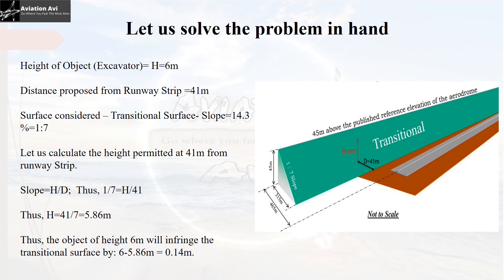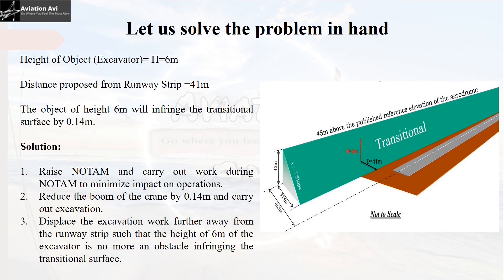The proposed height of the excavator is 6 meters, but the height permitted at 41 meters is only 5.86 meters. Therefore, the excavator will infringe on the transitional surface by 6 − 5.86 = 0.14 meters. In this case, we only have three solutions: either raise a NOTAM and carry out work during the NOTAM period to minimize impact on operations; or reduce the boom of the excavator by 0.14 meters and carry out the excavation work at the proposed distance of 41 meters so as not to infringe upon the transitional surface; or displace the excavation work further away from the runway strip such that the 6-meter height no longer infringes upon the transitional surface.